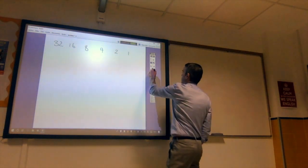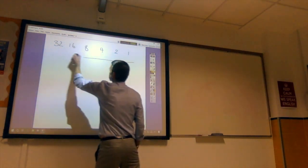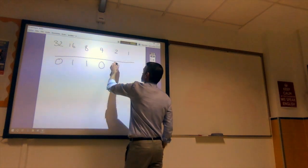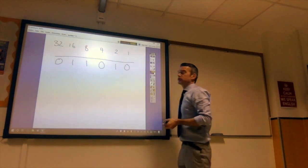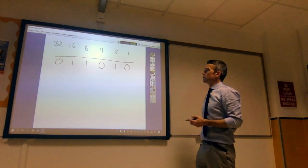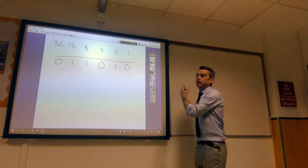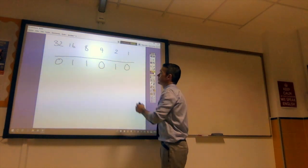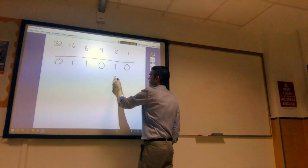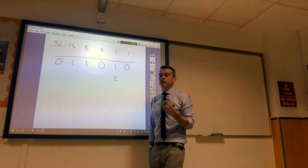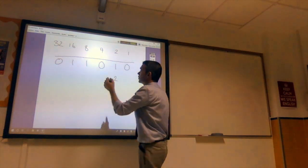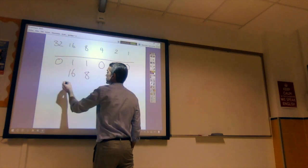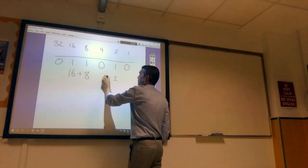So if I've got the number, what does this mean? We've got 0, 1, 1, 0, 1, 0. We start from the right-hand side. The ones unit. Well, we've got no ones, so we can ignore that. We've got a 2, because there's a 1 in the 2 column. We've got no 4s. We've got an 8. We've got 16 and no 32s. So we add those together.